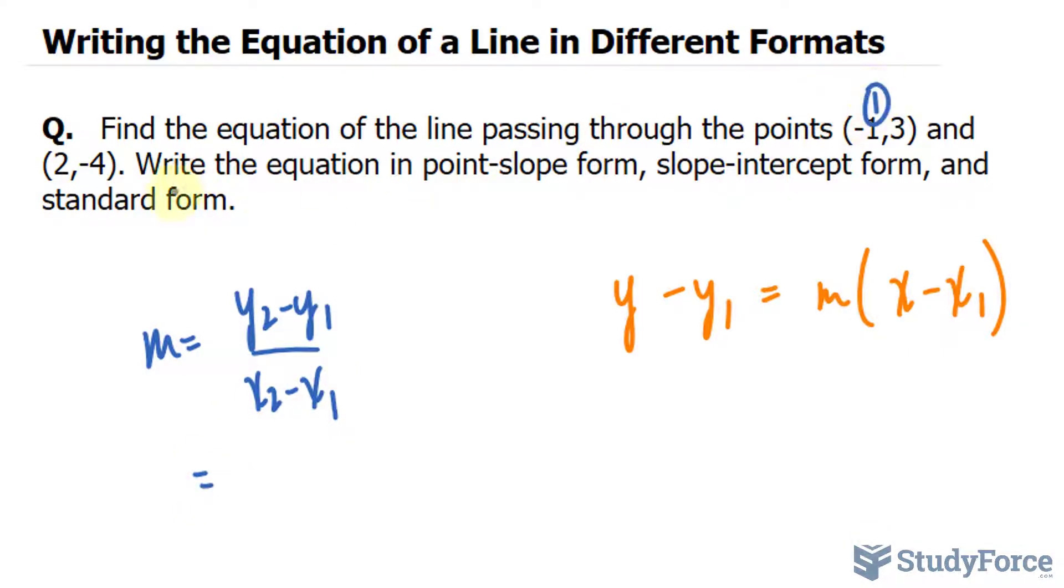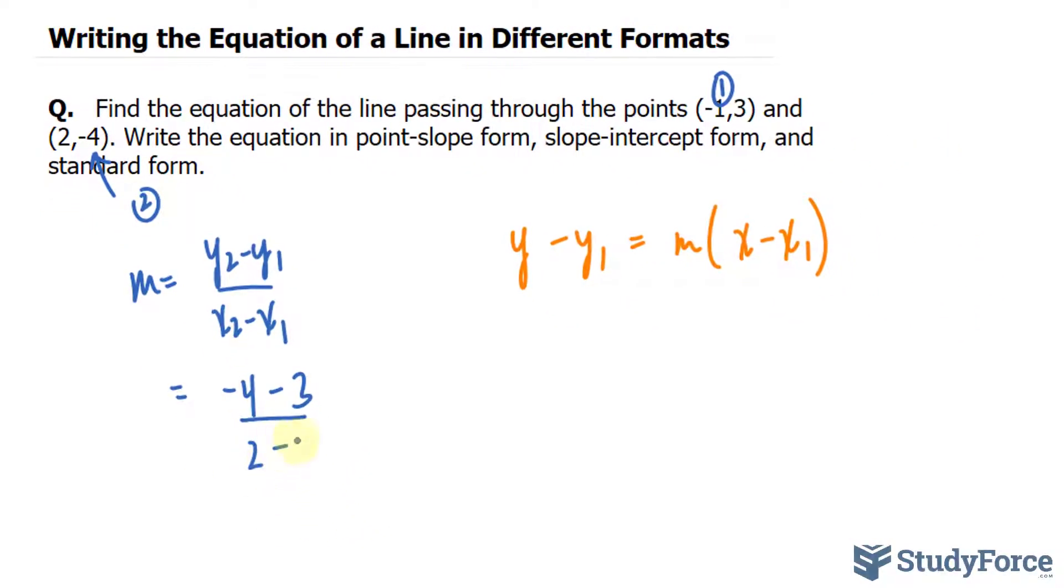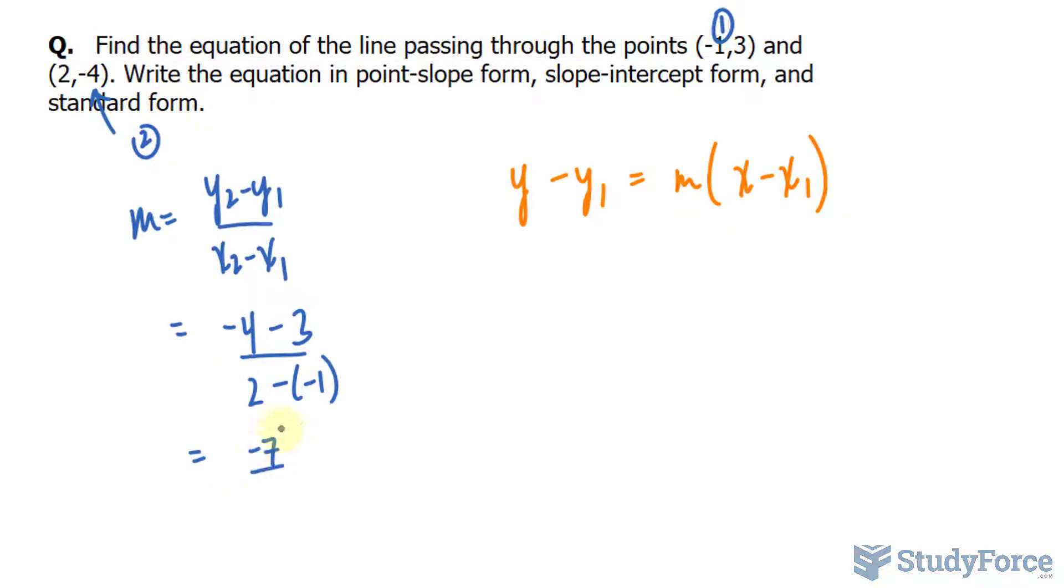Let's call this point 1 and that is point 2. If this is point 2, then y2 is negative 4 minus 3 and x2 is 2 minus negative 1.